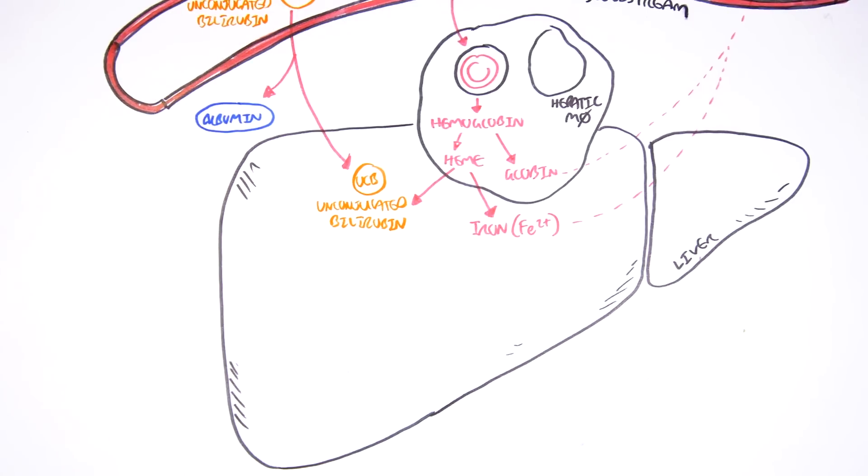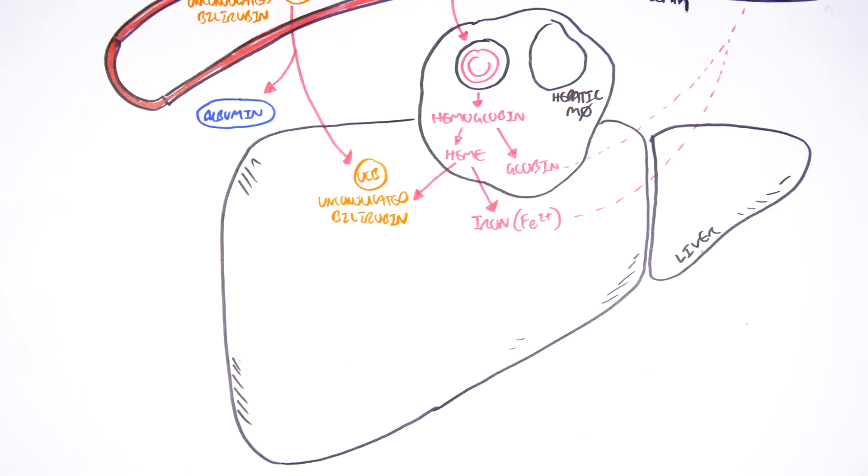Okay, so we end up with the unconjugated bilirubin in the liver. What happens next? Well, remember the unconjugated bilirubin is lipid-soluble. In the liver, there will be a reaction that takes place called conjugation.